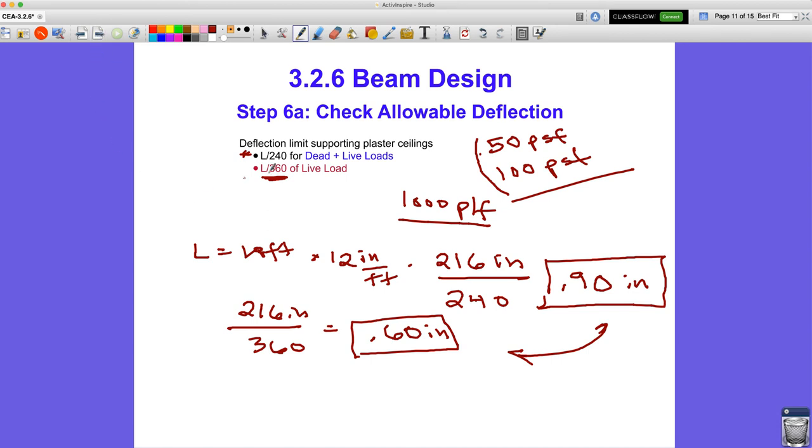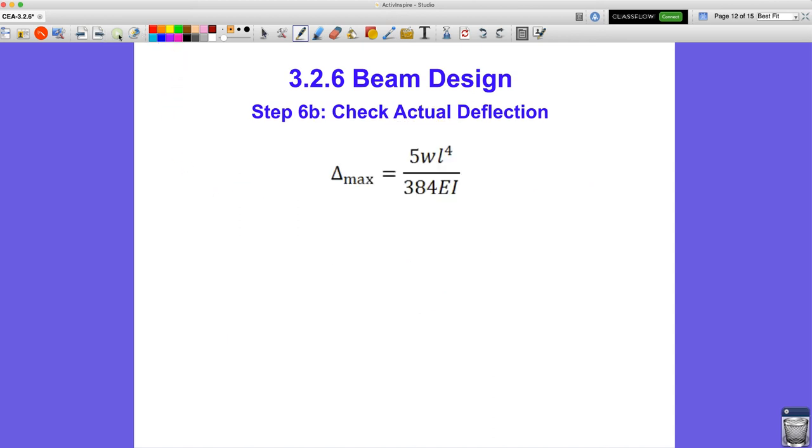So this is the limits, the allowable. Now we have to go and calculate the actual. So here's that gnarly formula. And we're going to start with the total design load, dead load plus live load, because it's an easy number. It's 1,000 pounds per foot.